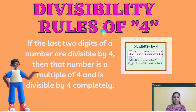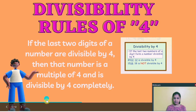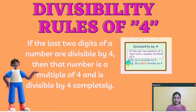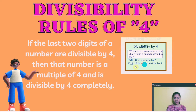Divisibility rules of 4. If the last two digits of a number are divisible by 4, then that number is a multiple of 4 and is divisible by 4 completely. Example: if you take 8512, 12 is divisible by 4 because we check the last two digits and 12 is in the table of 4 — 3 fours are 12. But if you take 1518, 18 is not divisible by 4 because 18 is not in the table of 4.